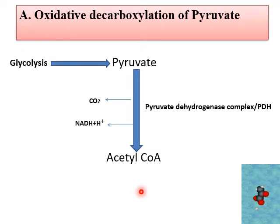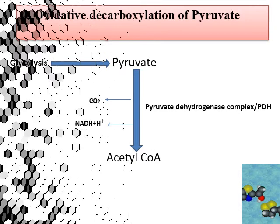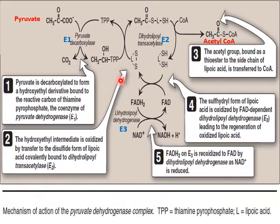Now we will see in detail how pyruvate is converted into acetyl CoA through oxidative decarboxylation. In this complete reaction, NADH is formed and carbon dioxide leaves.